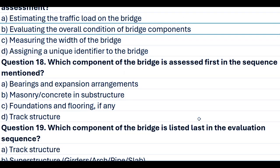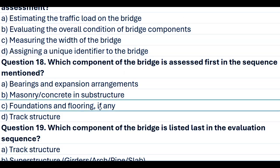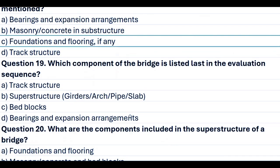Question 18. Which component of the bridge is assessed first in the sequence mentioned? A. Bearings and expansion arrangements. B. Masonry concrete in substructure. C. Foundations and flooring, if any. D. Track structure. Answer C. Foundations and flooring, if any.